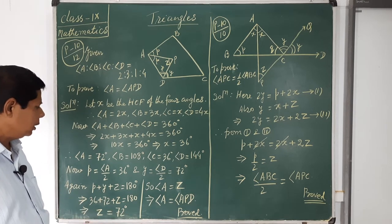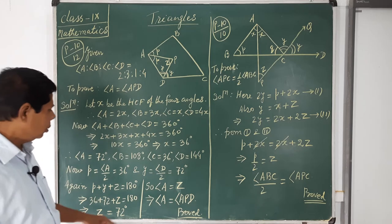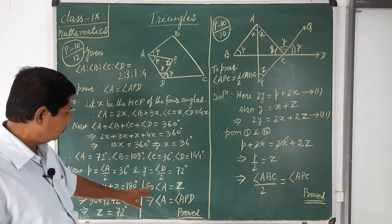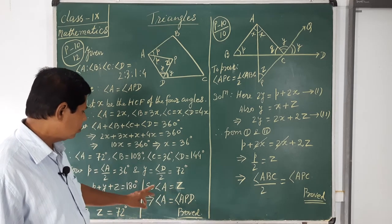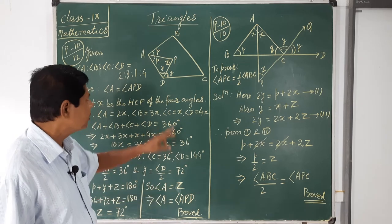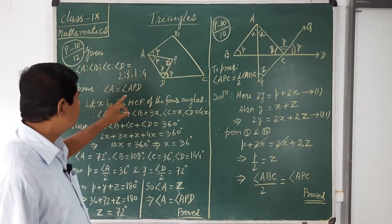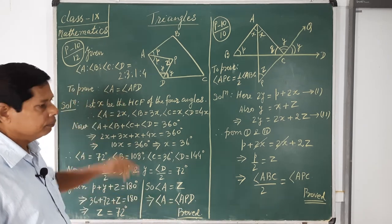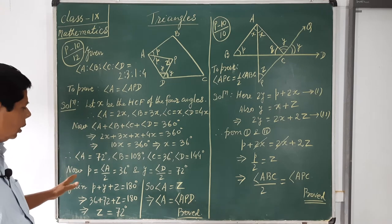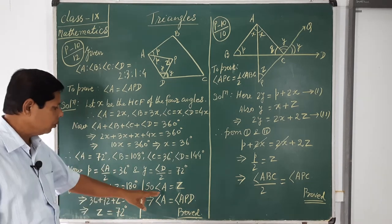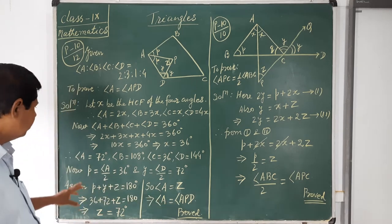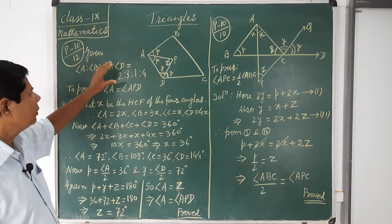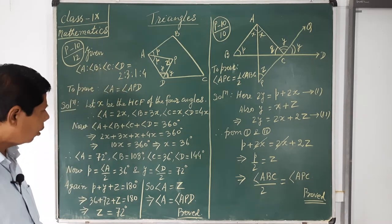So z = 72° and angle A = 72°. Therefore angle A = angle APD = 72°, which is required to prove. In this way, we calculate the angles and show that these two angles are equal at 72°. Because this ratio is given, we can easily calculate the angles of the quadrilateral.